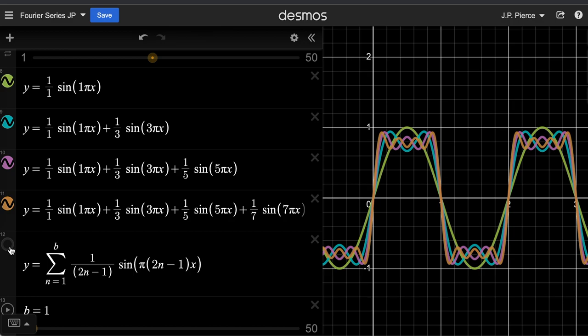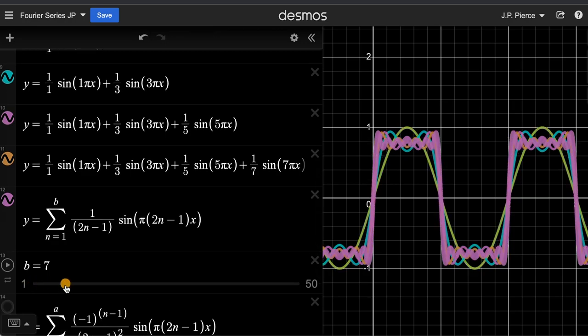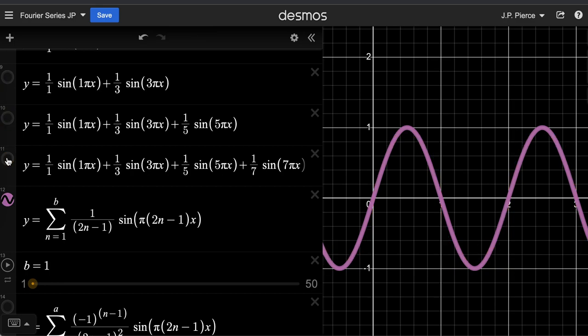If we push this to its limit, or at least keeping the first many, many of these functions, what you'll see is that this function approaches a square wave with sharp corners. So just to make it a little easier to see, I'm going to disable these functions here, and we'll just show this one.